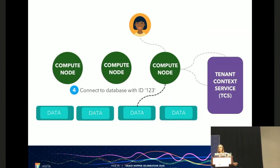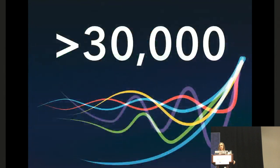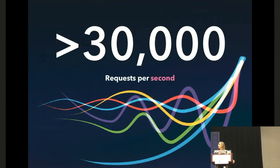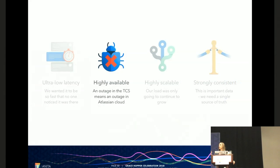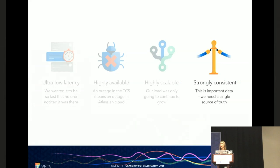So this seems easy enough aside from the fact that we've just introduced a lookup into every single request that is made in Jira and Confluence Cloud. And to put that into perspective that's actually over 30,000 requests per second. And so that meant we needed to be pretty careful with how we built this thing. It needed to be really really fast. We didn't want people to even realize this lookup was happening. It had to be incredibly highly available because if that TCS went down that was an outage in Atlassian Cloud. It had to be incredibly highly scalable because 30,000 requests per second was a number that was only going to continue to increase. And finally it had to be strongly consistent because this is tenant configuration which is really critical data. And so we wanted to be completely sure that we had a single source of truth that gave us an accurate representation of what any of our tenants look like at any point in time.